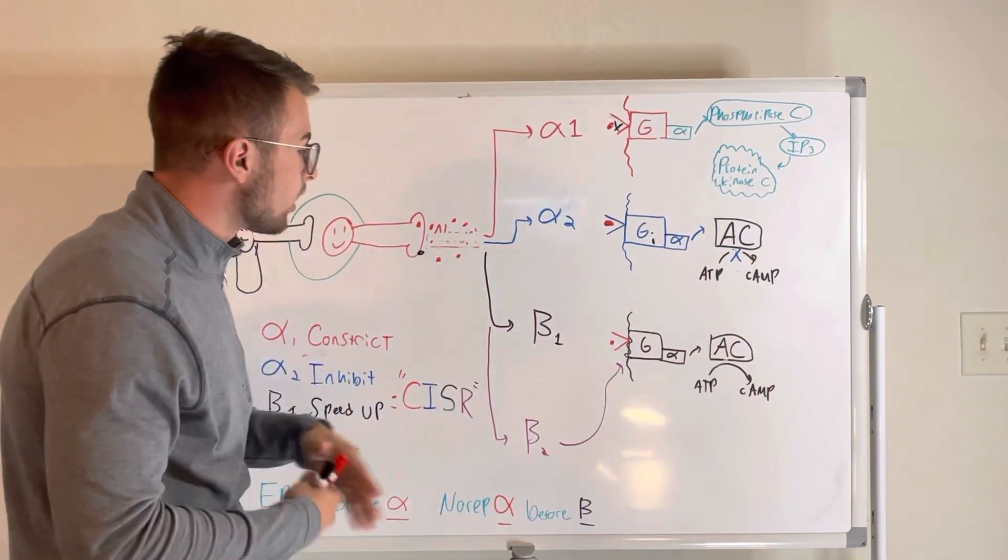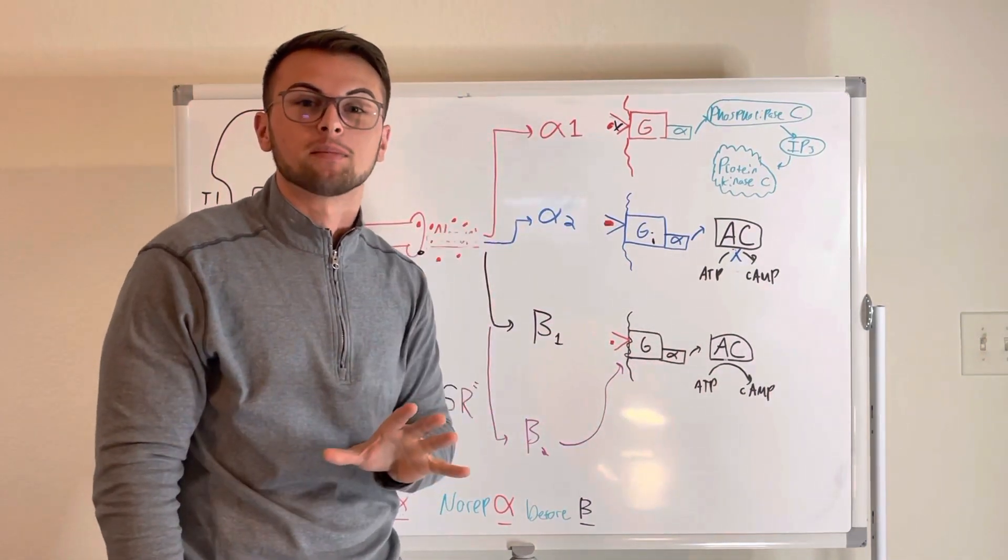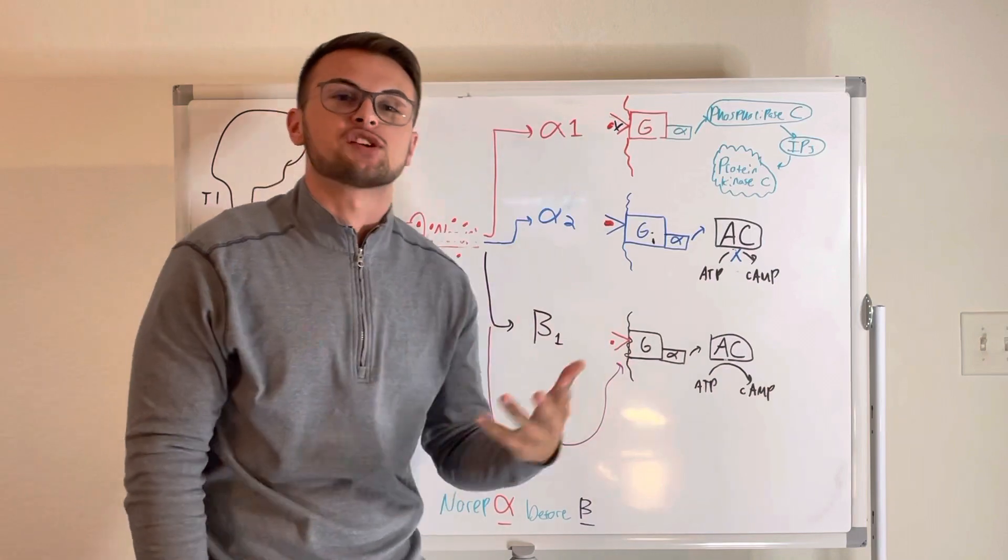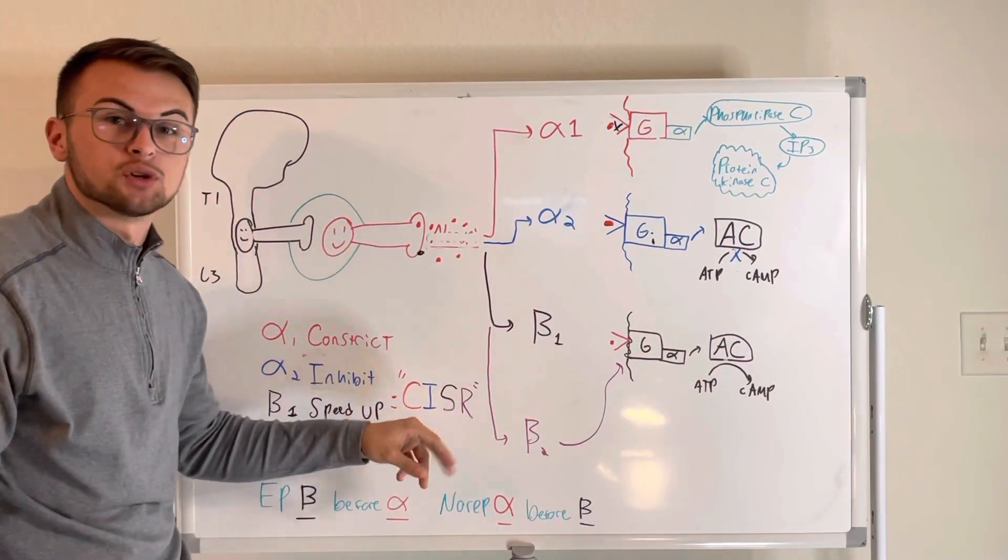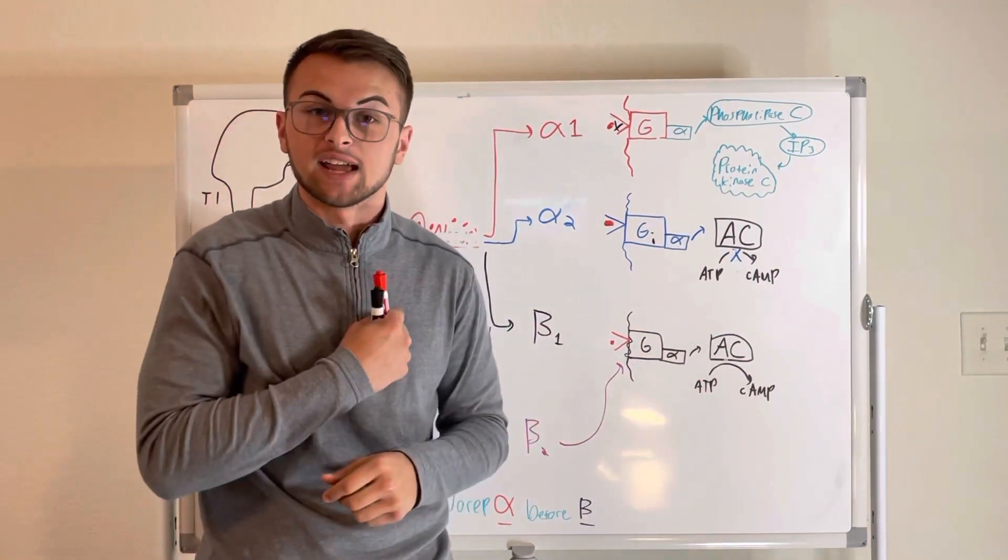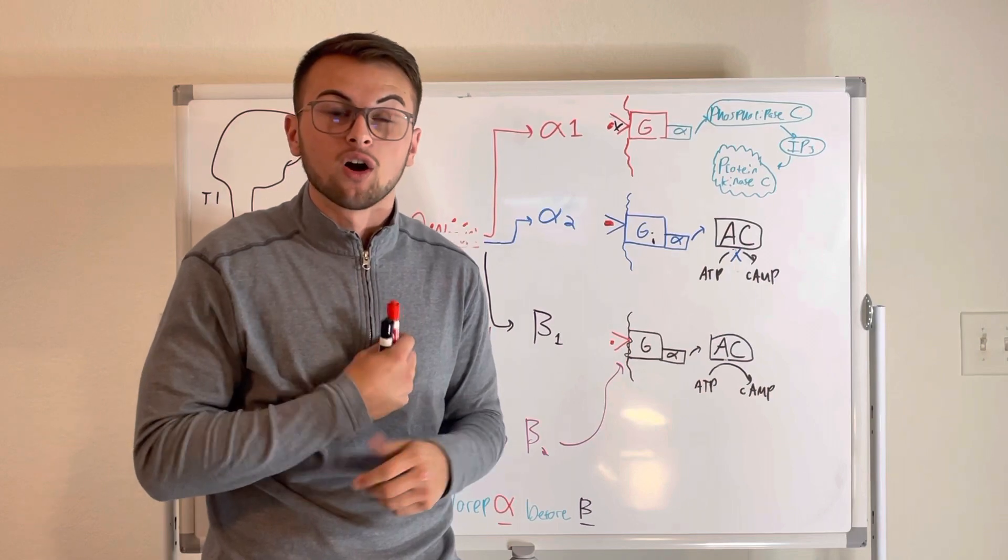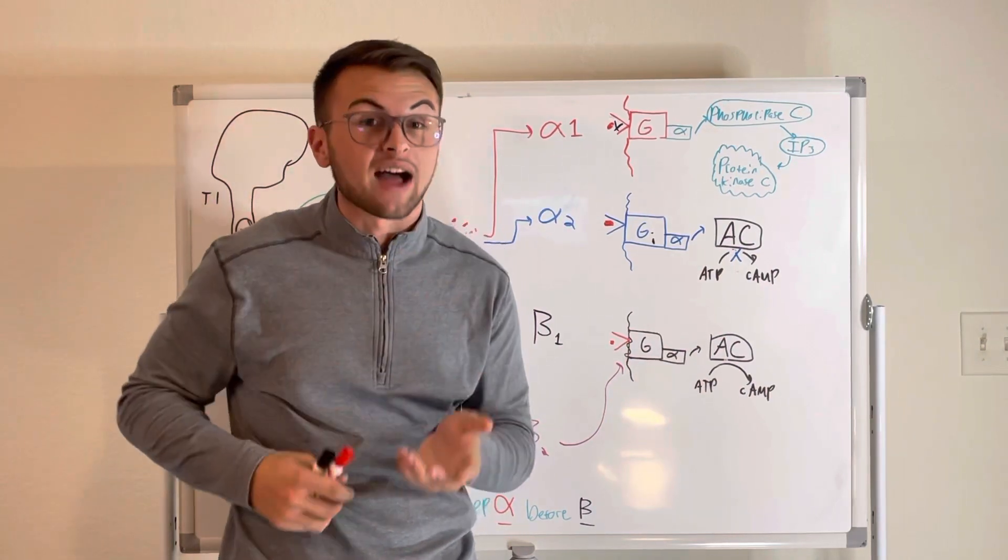So, now we're going to talk about the beta-1 receptors. These are extremely popular. They speed up the actions of our cells. Remember CISR, we're talking about the S right now, which is speed up. Specifically, we have beta-1 receptors in our SA node, our AV node, our ventricular myocytes, our salivary glands, our fat cells, and our kidneys.